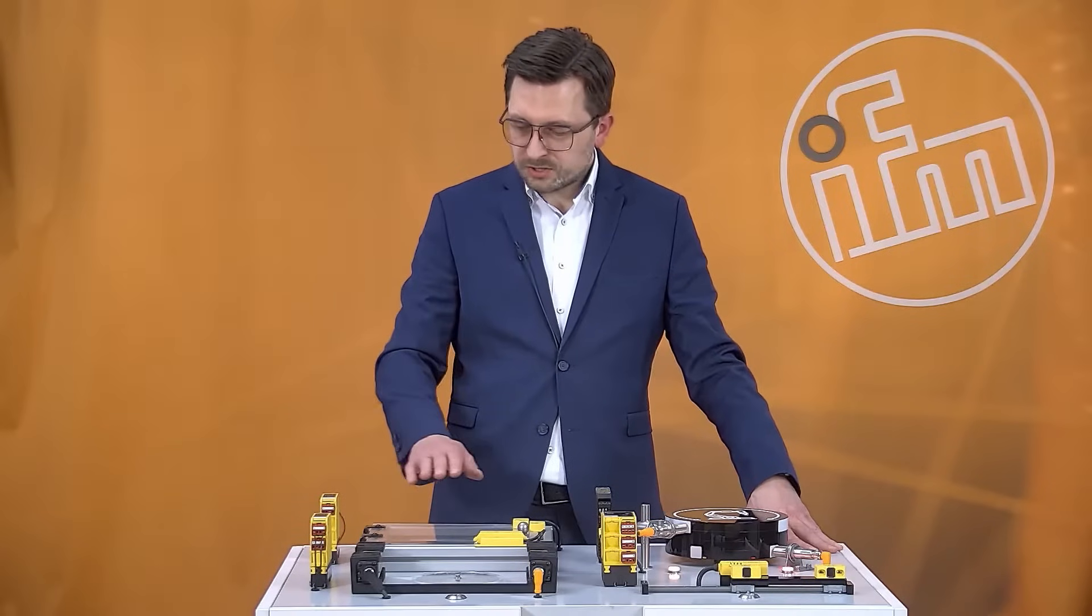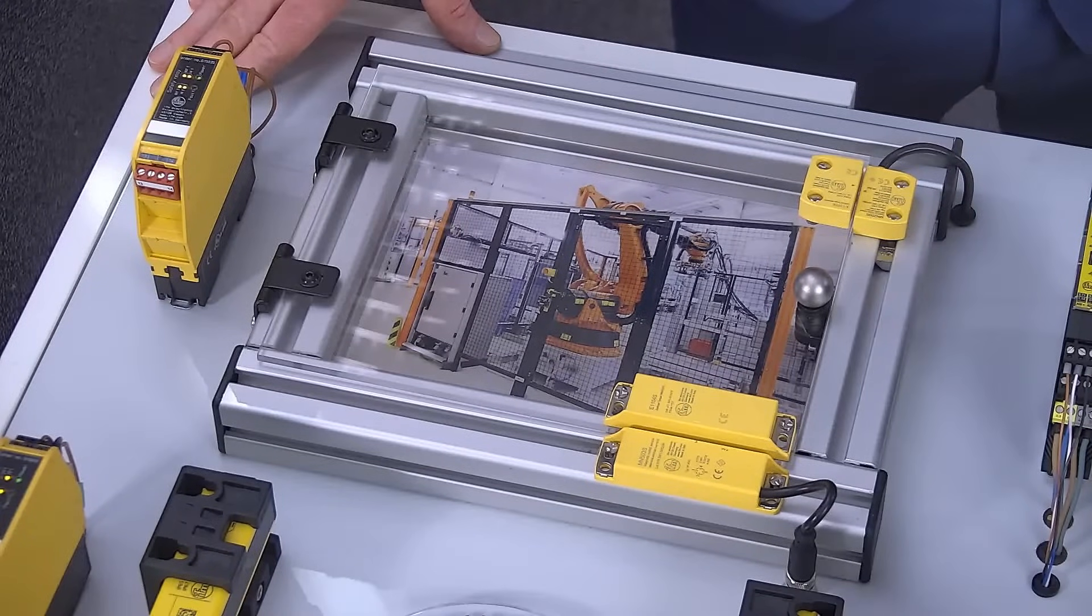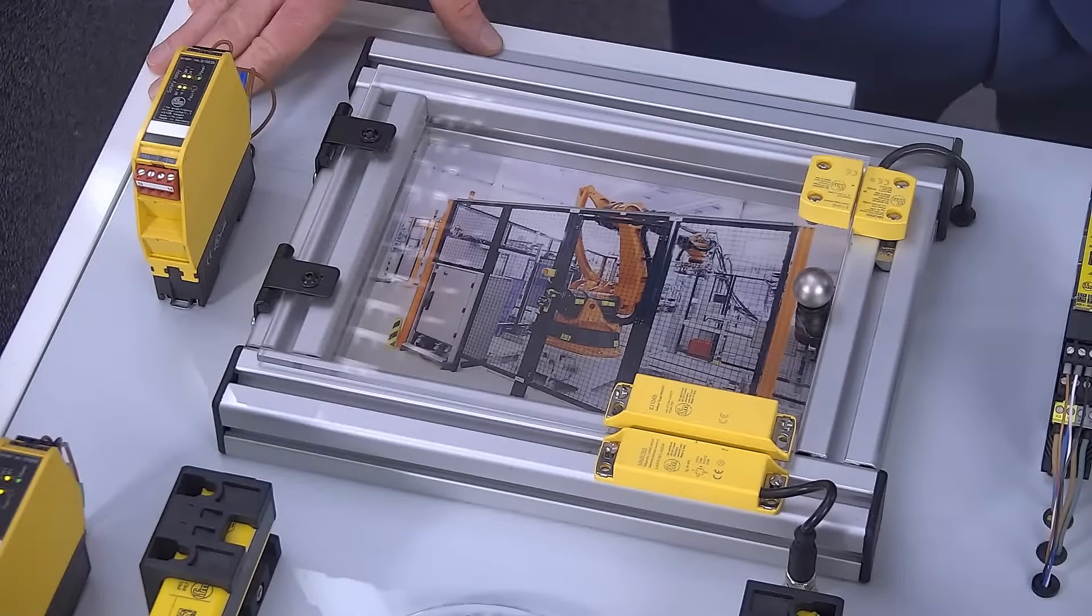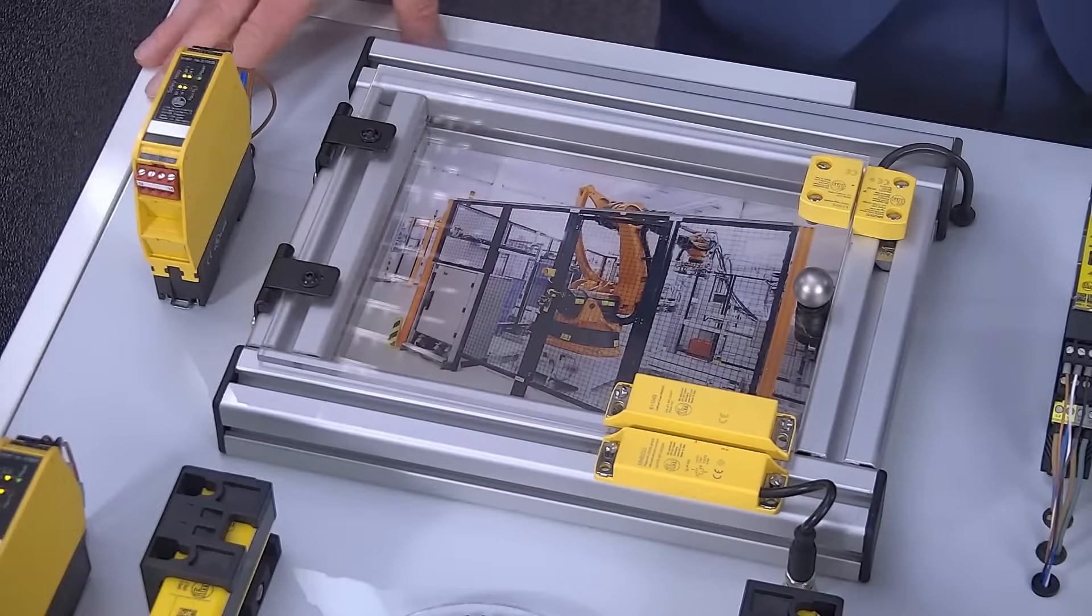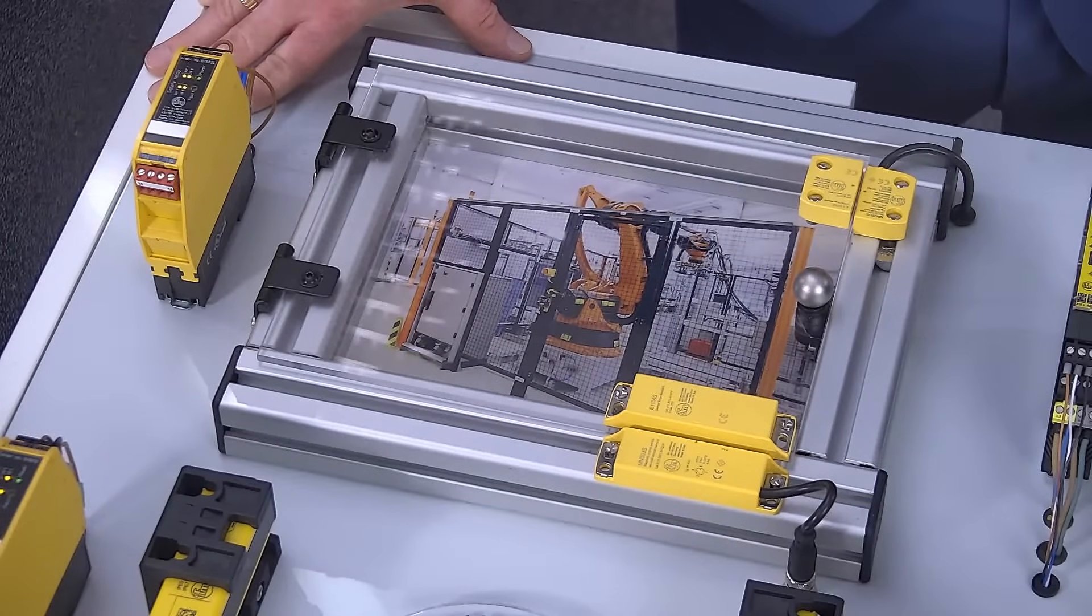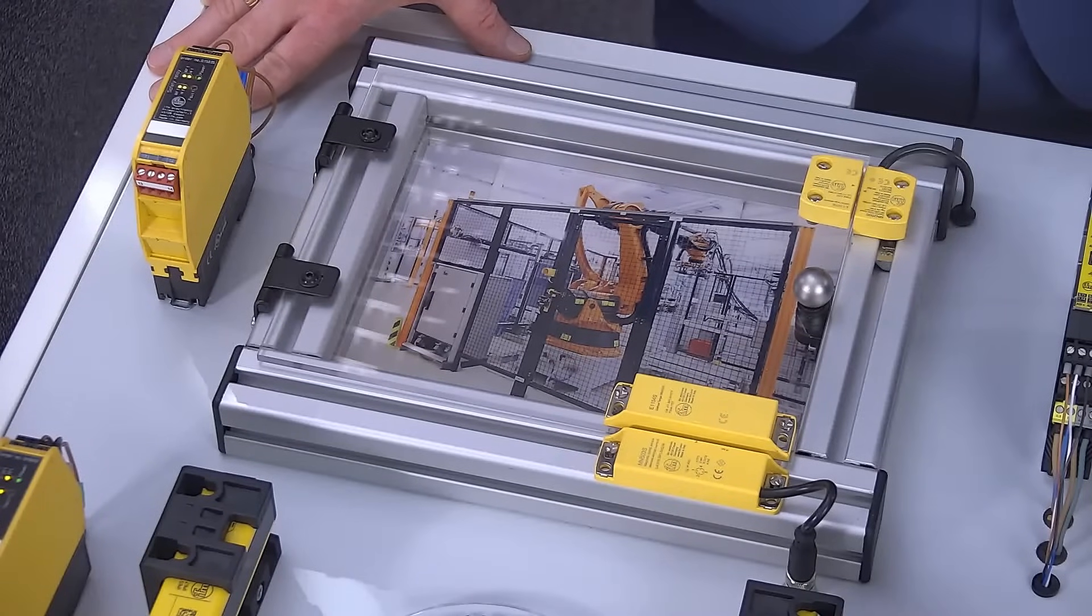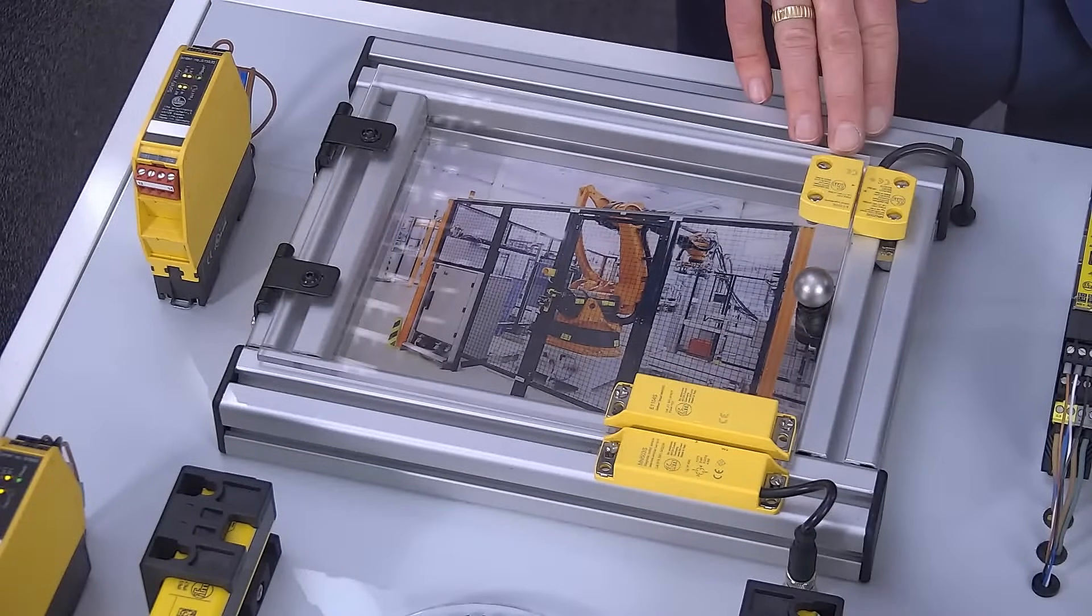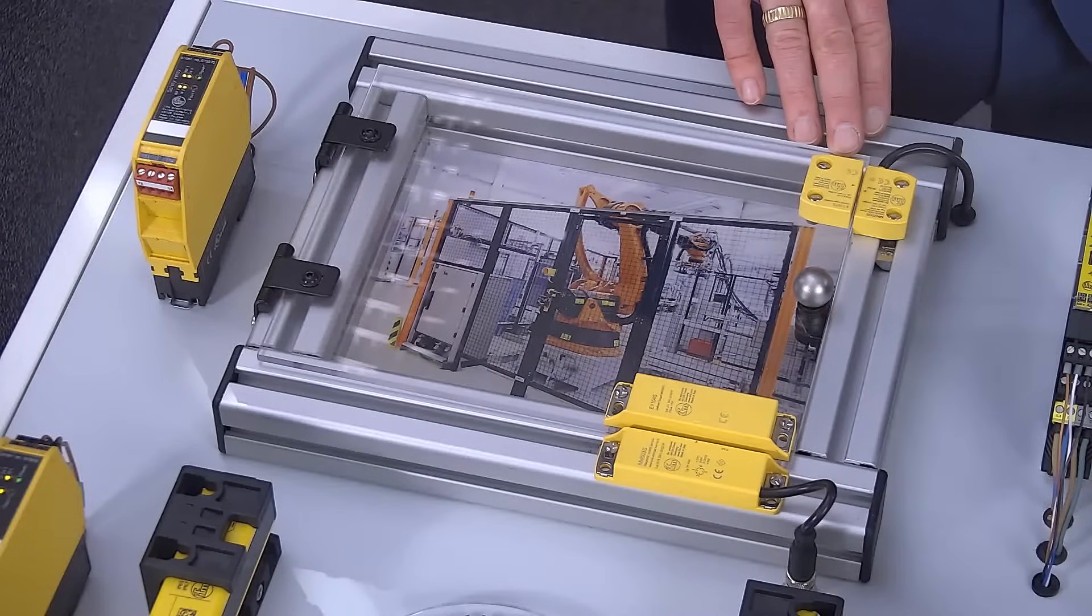On this application over here you can see two different housing shapes in this magnetic safety portfolio. The bigger housing shapes, quite well known in the market, offers a sensing range of 8 mm. The smaller housing shape offers 5 mm sensing range.